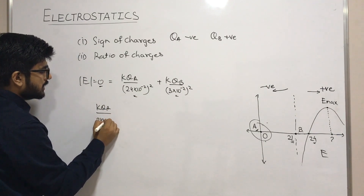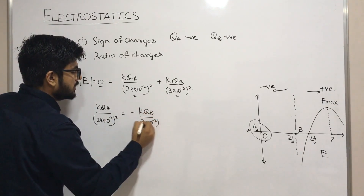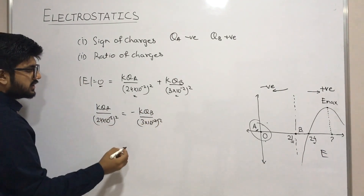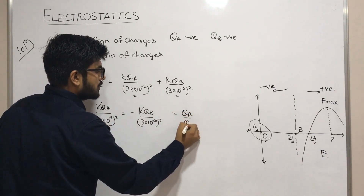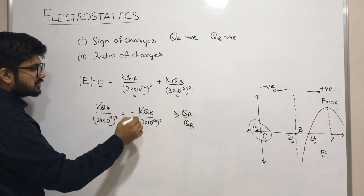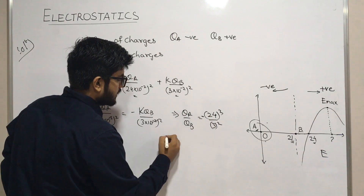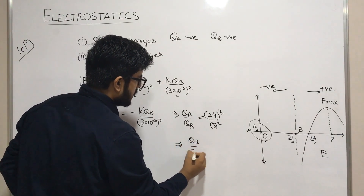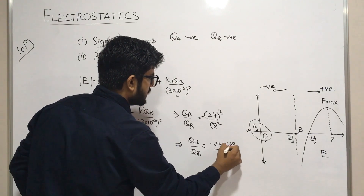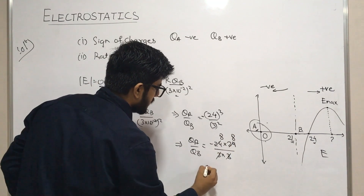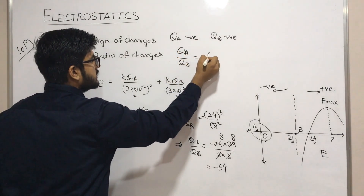When the electric field is zero we write: k·qa upon (24×10⁻²)² equals minus k·qb upon (3×10⁻²)². The 10⁻² cancels on both sides. Then we can write qa upon qb equals 24² upon 3², which gives us qa upon qb equals minus (24×24)/(3×3). After simplification, qa upon qb is equal to minus 64. This is our second question solution.